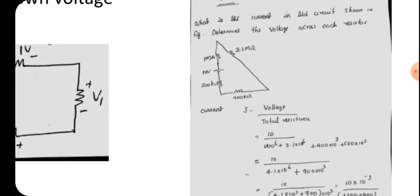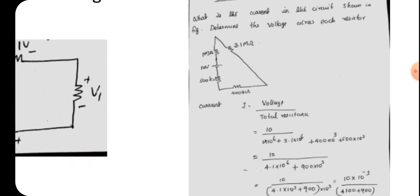Next problem: what is the current in the circuit shown in the figure, and determine the voltage across each resistor. The circuit contains a 10-volt battery, a 1 mega-ohm resistor, a 3.1 mega-ohm resistor, a 400 kilo-ohm resistor, and a 500 kilo-ohm resistor. We need to find the current and voltage across each resistor. It is a series circuit.